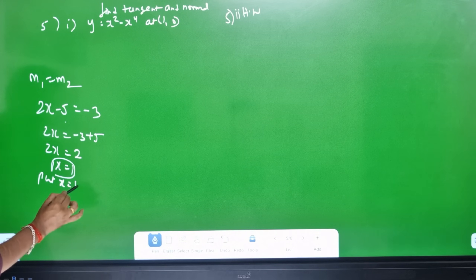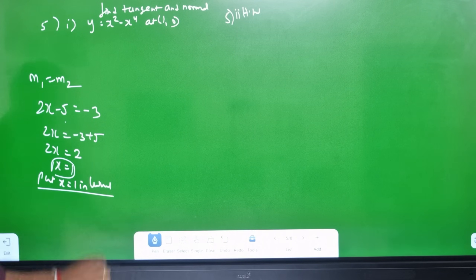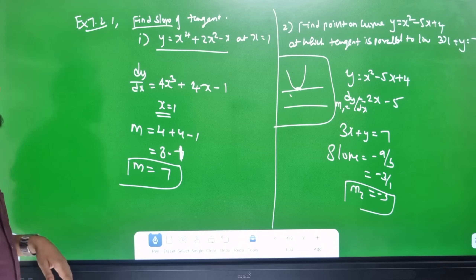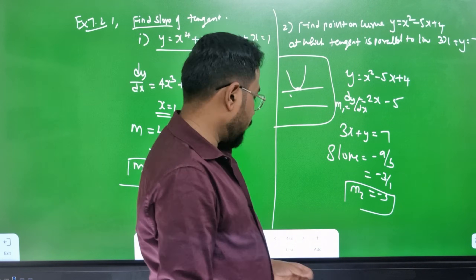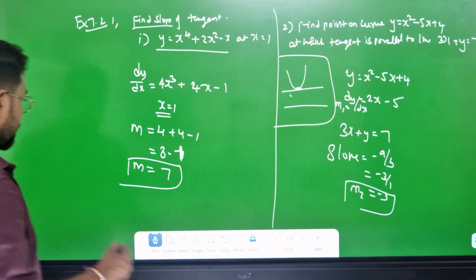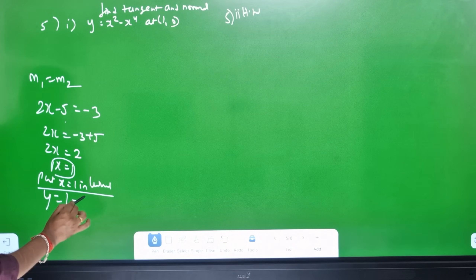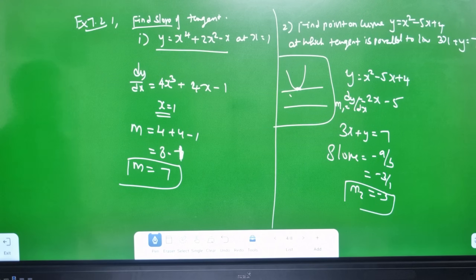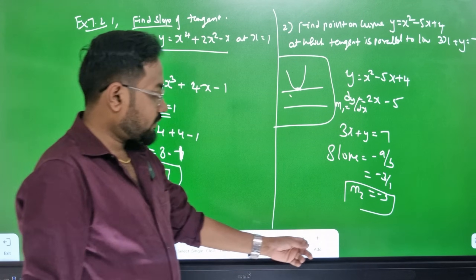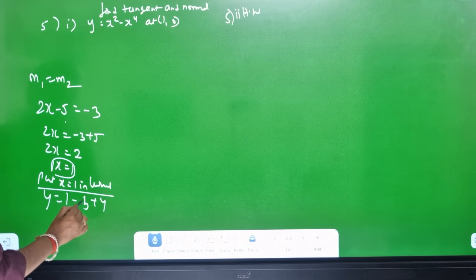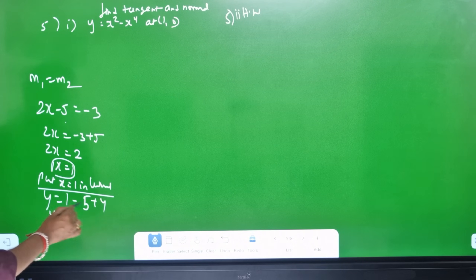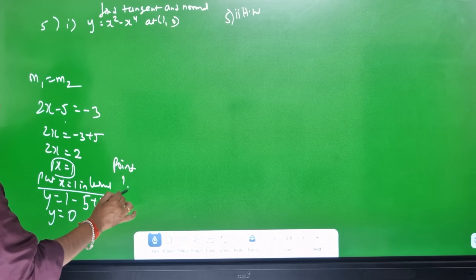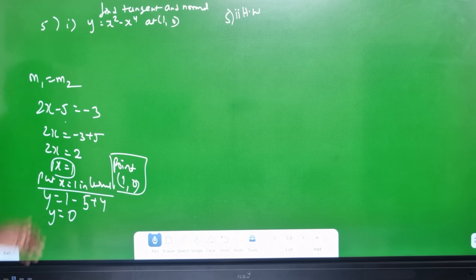Put x equals 1 into the curve: y equals x² minus 5x plus 4 equals 1 minus 5 plus 4 equals 0. So y equals 0. The point on the curve is (1, 0).